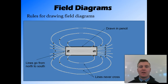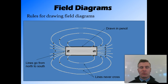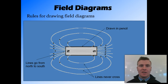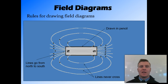With magnets and other non-contact forces, we can draw the field of influence using a technique called field diagrams. With field diagrams, we draw the object and then show the field of influence around it by drawing lines. There are a couple of rules: as always in science, we draw in pencil, and the lines never cross or touch each other.